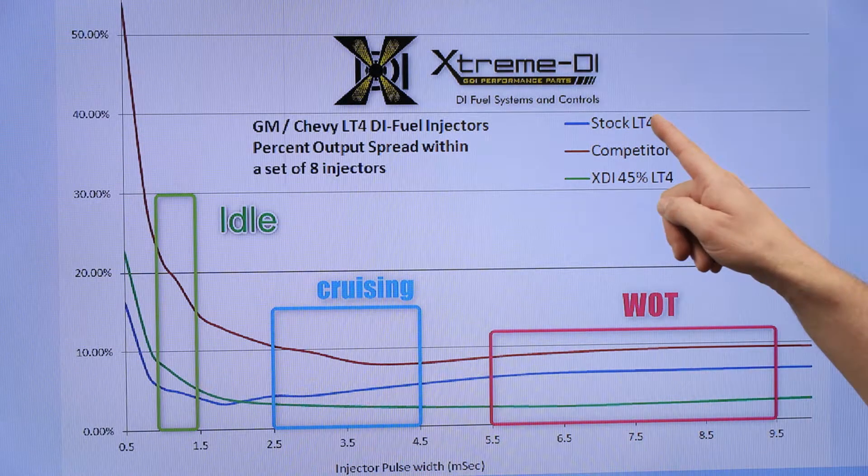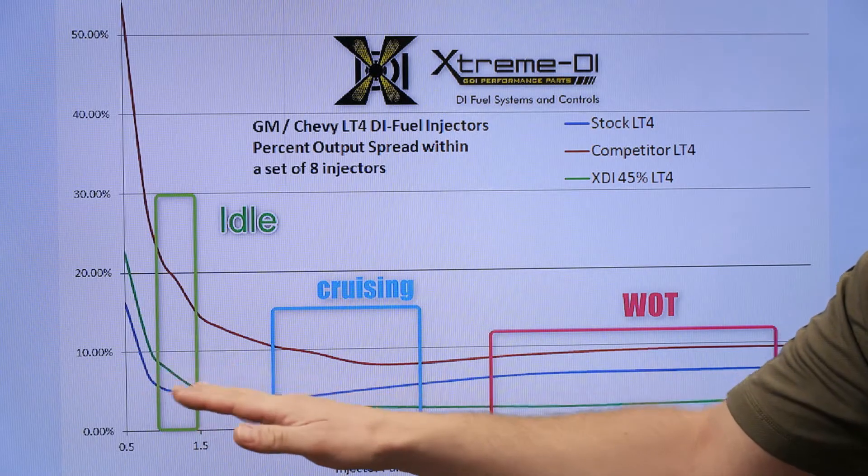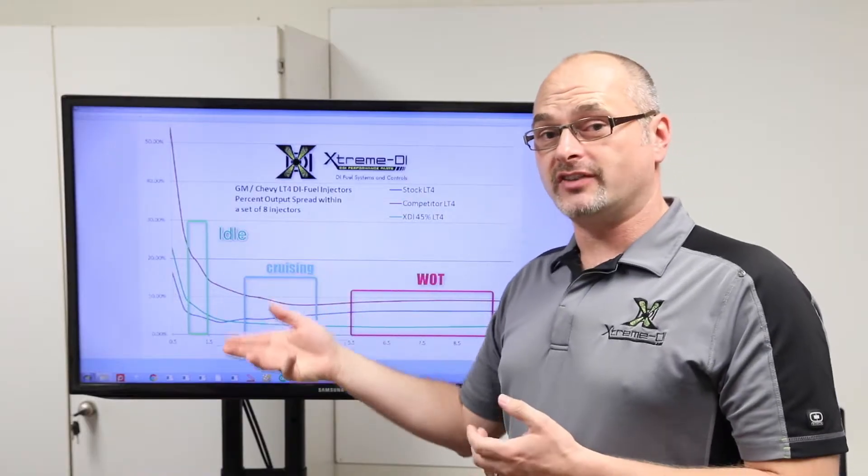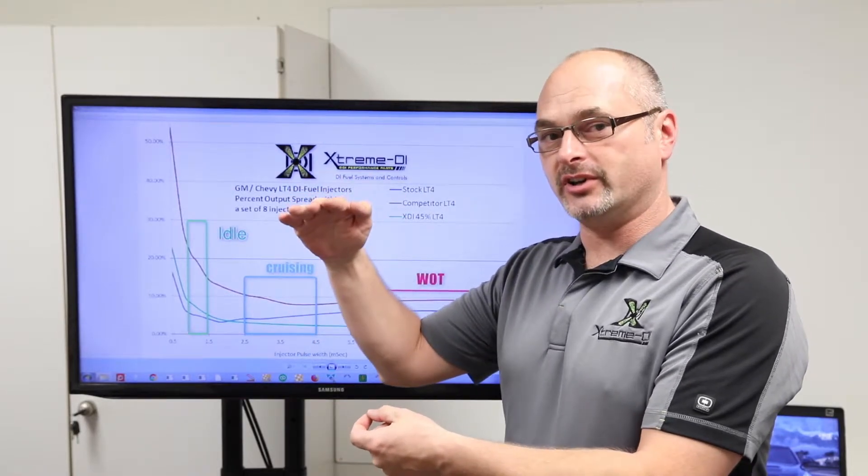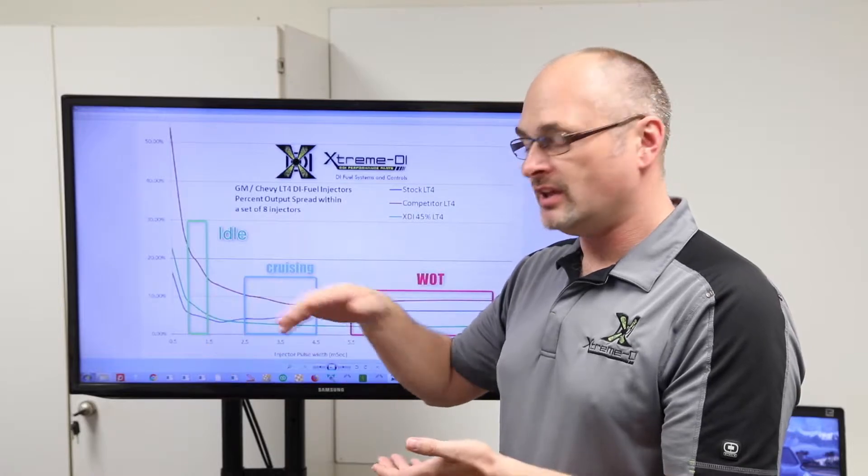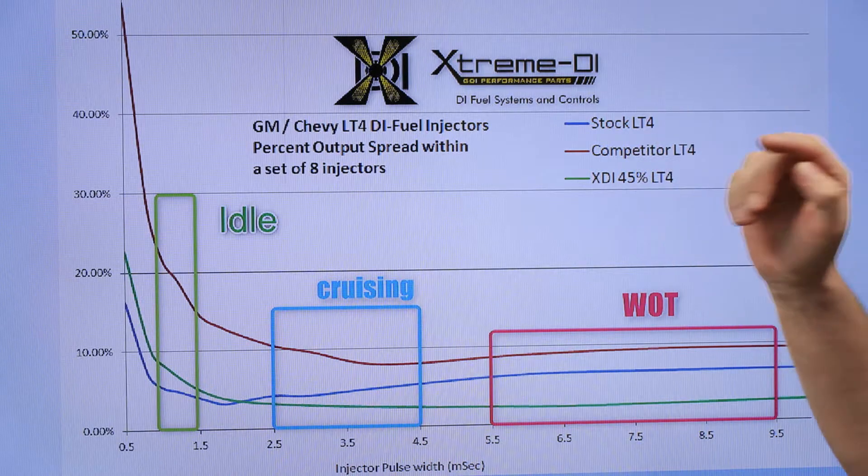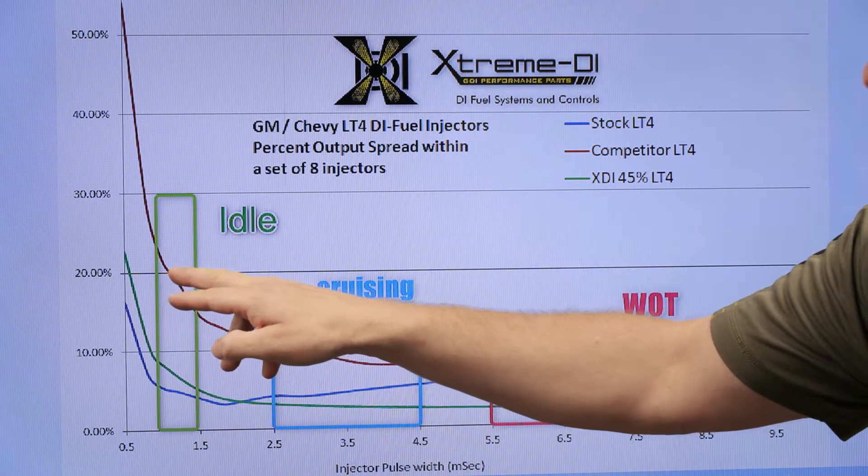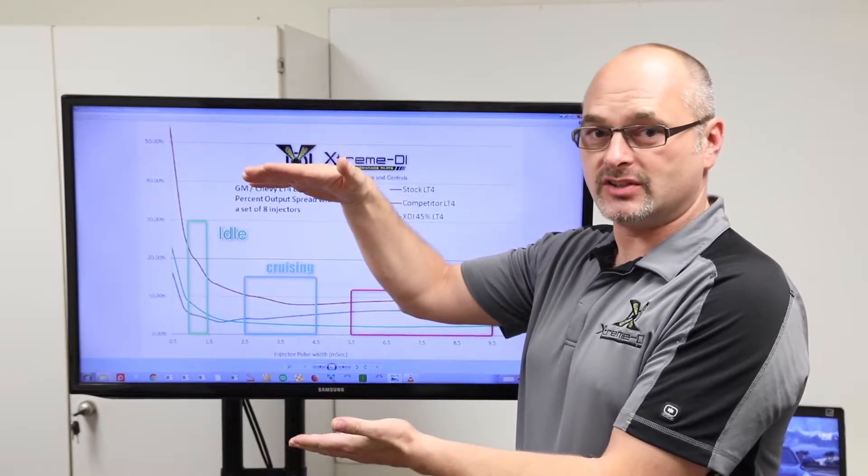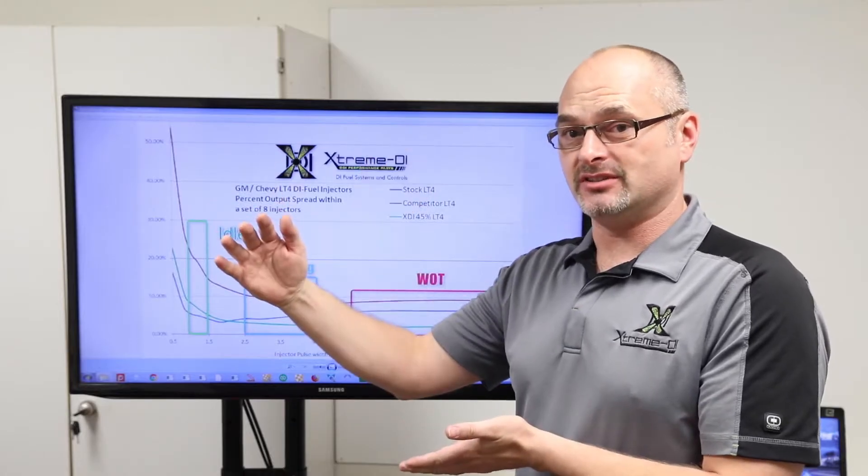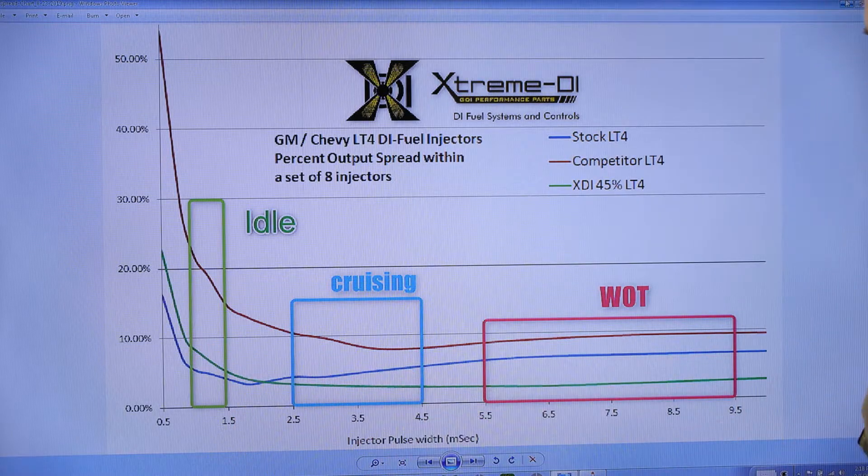What you can see here, the stock injector set, the blue one in the idle area, has a spread of around four to five percent. Four to five percent means, in a set of eight, the lowest flowing injector and the highest flowing injector at one millisecond pulse width have a spread of four to five percent. The competitor injector in this area has a spread of 20 percent. The lowest flowing injector and highest flowing injector in the set of eight is a 20 percent difference. Our XDI 45s in the idle area are around five to six percent.